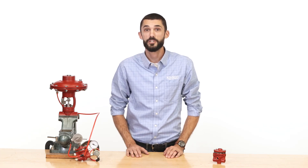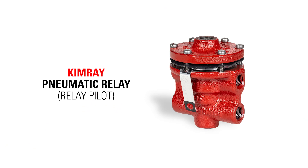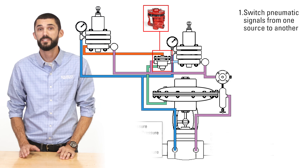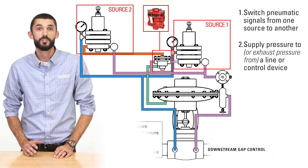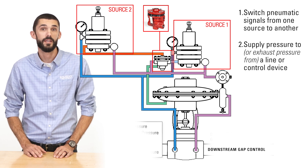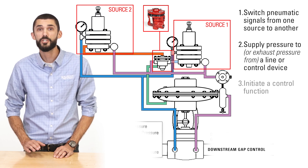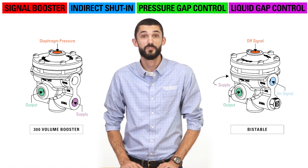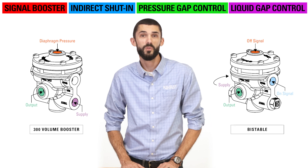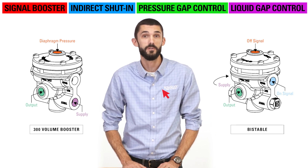If you've ever needed to increase the pressure you're getting from your PG pilot, the ideal solution may be a pneumatic relay. I'm Kyle with Kimray, where we help energy producers solve their biggest control challenges. Pneumatic relays are commonly used to switch pneumatic signals from one source to another. They supply pressure to or exhaust pressure from a particular line or control device and initiate a control function. In this video we'll cover four common applications for a relay and explain how they work and where you might see them in an oil and gas field.